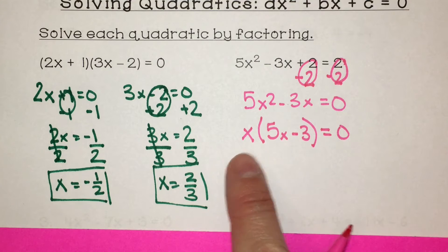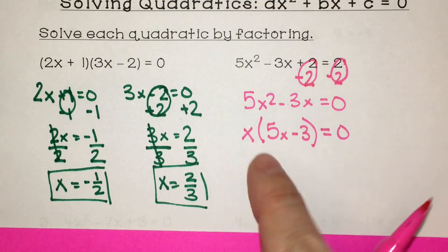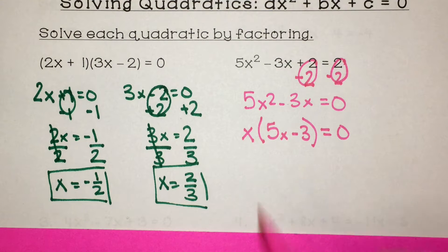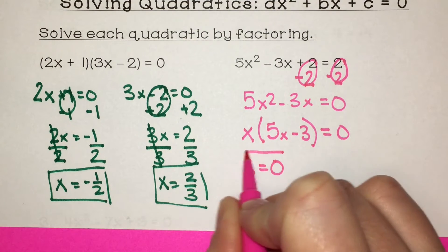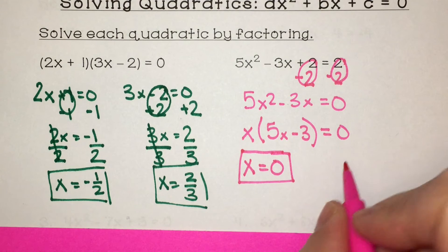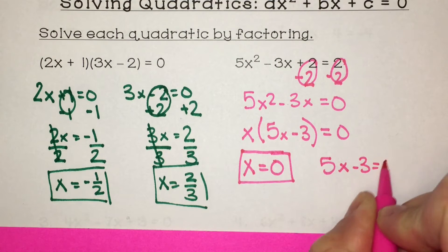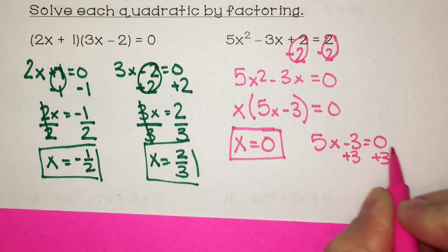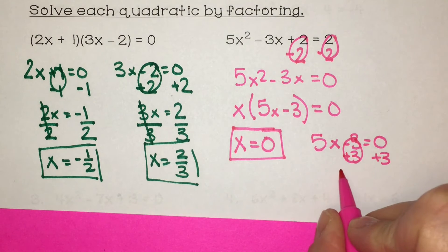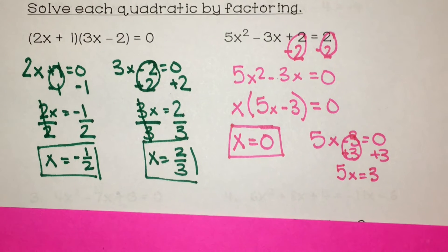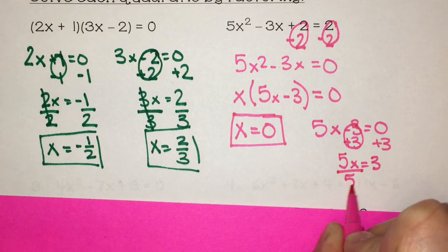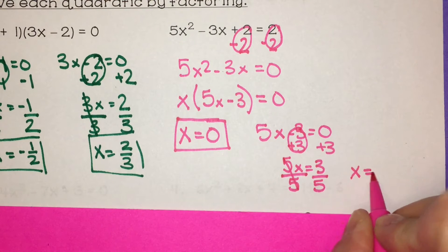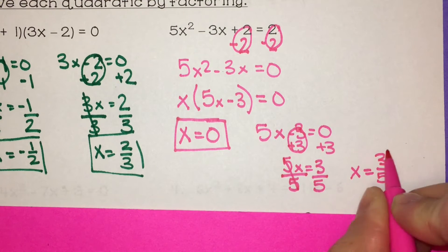Even though this x is not in parentheses, I could put it in parentheses if I wanted to. I need to set both of these individually equal to 0 to solve for x in both cases. So x equals 0 is one solution, and also 5x minus 3 equals 0. I need to move the minus 3 to the other side by adding 3 to both sides. Negative 3 plus 3 is 0, so I have 5x equals positive 3. Dividing both sides by 5, x equals 3 fifths. Make sure you leave it as a fraction.